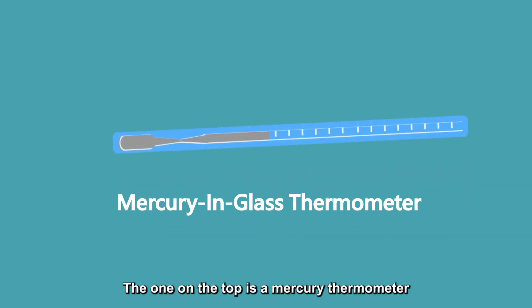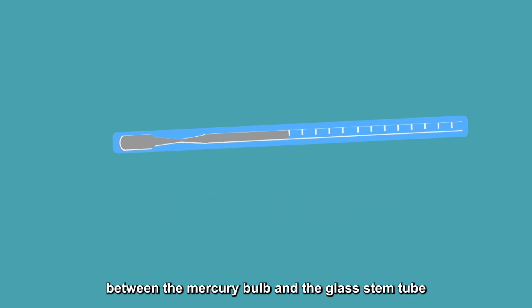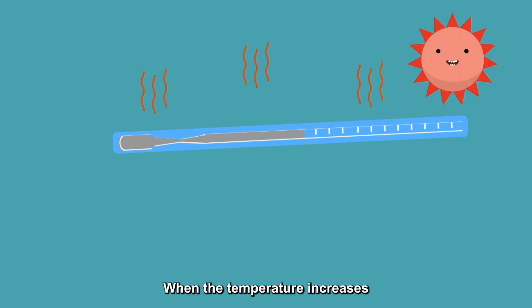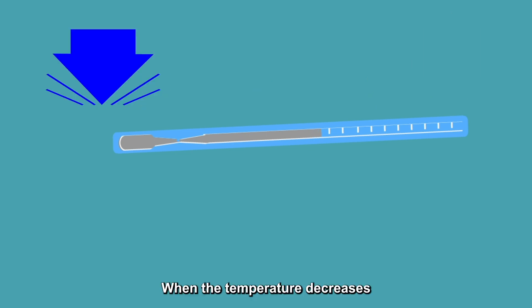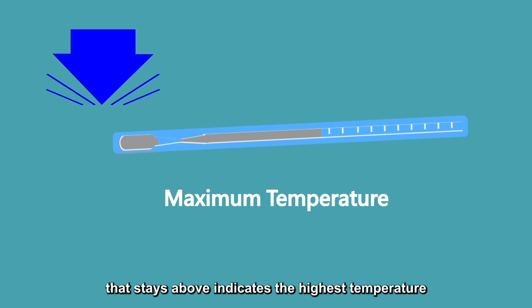The one on the top is a mercury thermometer, which is the most common maximum thermometer. There's a constricted passage between the mercury bulb and the glass stem tube. When the temperature increases, the mercury expands, and the mercury column rises. When the temperature decreases, the mercury contracts. Due to the high surface tension of mercury, the mercury column will break at the narrow passage during contraction. The remaining mercury column that stays above indicates the highest temperature.